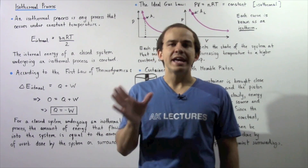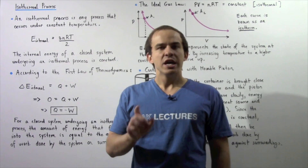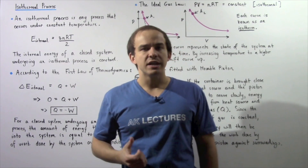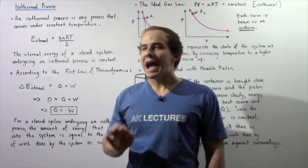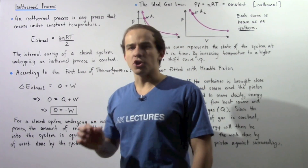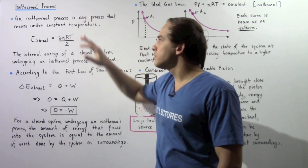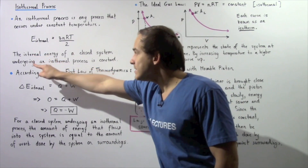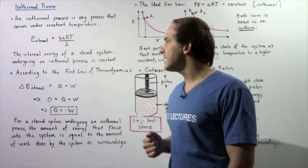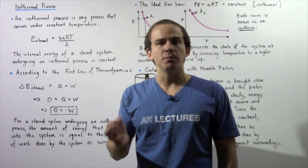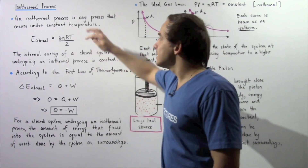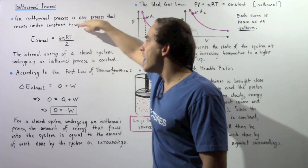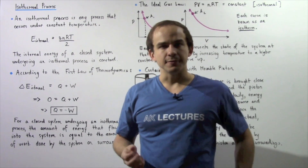For a closed gaseous system, there is no exchange of molecules, so n — the number of moles of gas — remains constant. And if our system is undergoing an isothermal process, the temperature also remains constant. Therefore, the internal energy of a closed ideal gaseous system undergoing an isothermal process is constant, because T, R, and n are all constant, so this entire expression remains constant.